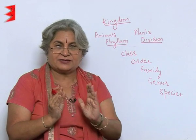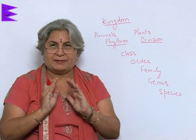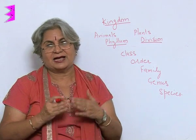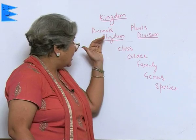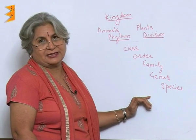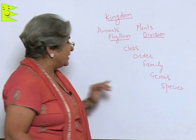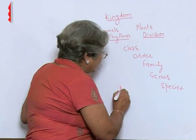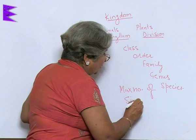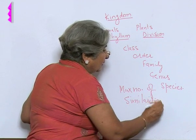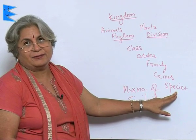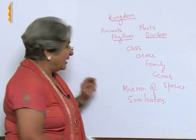If we take the case of one country, India, all the inhabitants of India are called Indians because they have a large number of similarities. As we move from top to bottom, the number of similarities keeps on increasing. So, obviously, in species there are maximum similarities — so much so that organisms belonging to the same species can reproduce and mate with each other.